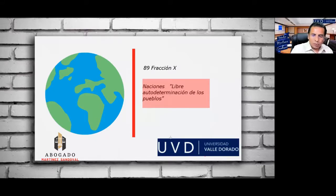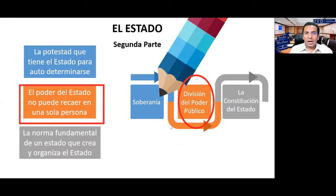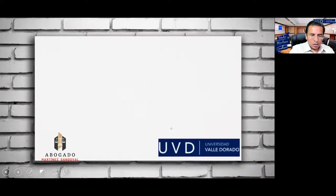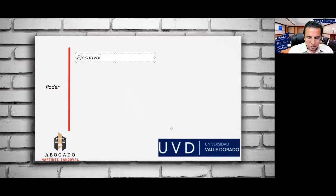Hay que dividir al poder para que este no se corrompa. Dividimos al poder porque no puede recaer en una sola persona. La división del poder es: poder ejecutivo, legislativo y judicial.